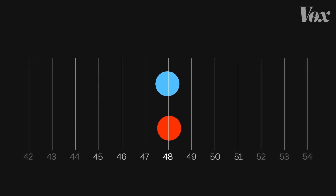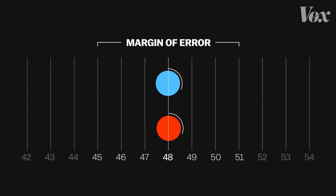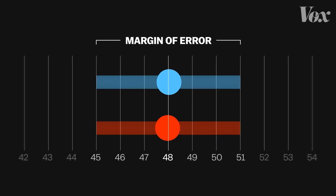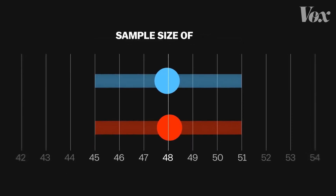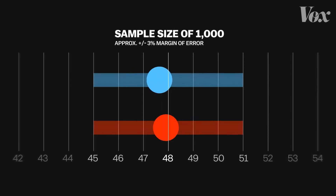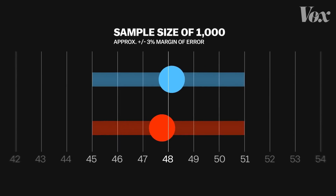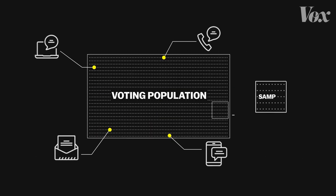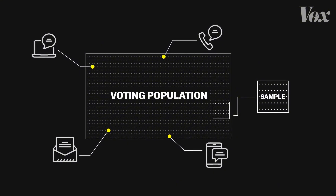The first thing to know about these numbers is there is a margin of error, which means this number is best thought of as the center point in a range of possible outcomes. For a sample size of 1,000, any number that's 3% different in either direction could still technically be accurate. This is simply because any time you depend on a sample to represent a larger population, there's a lack of precision.